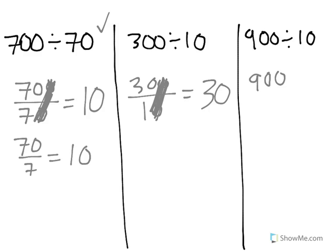And last, we have 900 divided by 10. We get rid of a 0 in the numerator and the denominator. We have 90 divided by 1, which is 90.